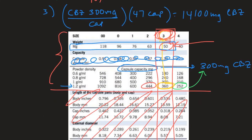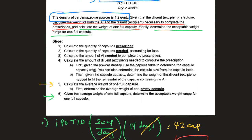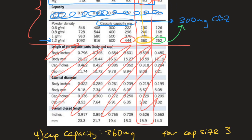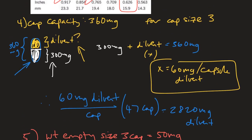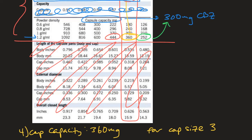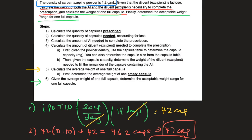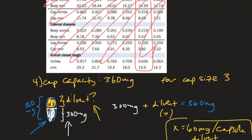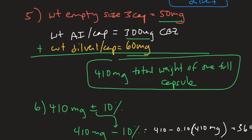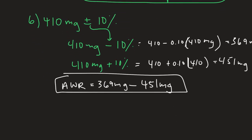In this problem, we solved for all parts. Number one: we calculated the weight of both the AI and the diluent needed — 14,100mg of carbamazepine and 2,820mg of diluent for the prescription (60mg per capsule × 47 capsules). The problem also asked to calculate the weight of one full capsule: 410mg total. The acceptable weight range of one full capsule is between 369mg and 451mg.